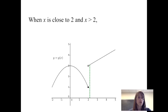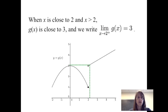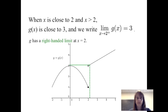When x is close to 2 and x is greater than 2 — so from a number line perspective, we're approaching 2 from the right — g of x, the output, is close to 3. We write that the limit of g of x as x approaches 2 from the right, denoted with the little plus sign, is equal to 3. We say that g has a right-handed limit at x equals 2.